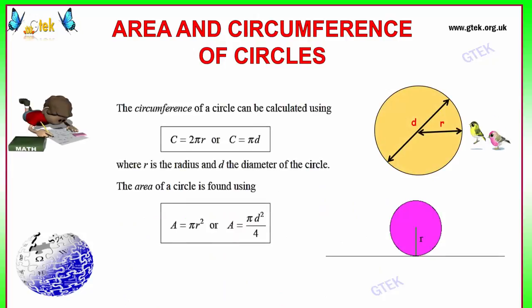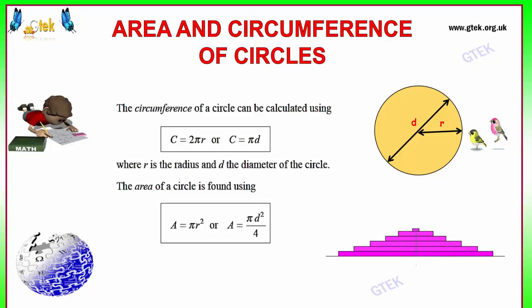Circumference of a circle can be calculated using the formula 2 pi r. Since 2r is equal to d, pi d can also be given. The circumference of the circle can be calculated using the formula 2 pi r.